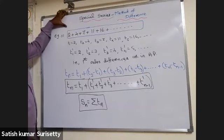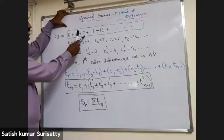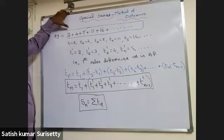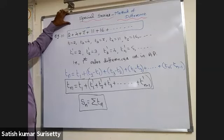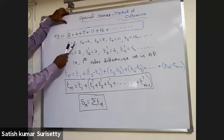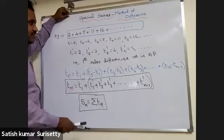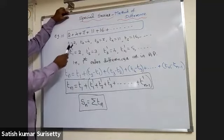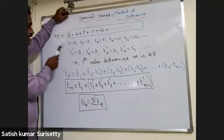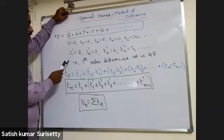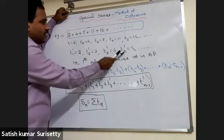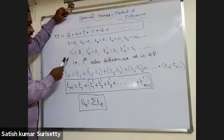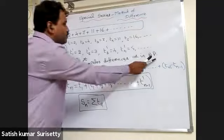Consider the example: 2 + 4 + 7 + 11 + 16 + ... The terms 2, 4, 7, 11, 16 are neither in AP, GP, HP, nor AGP. Here t1 = 2, t2 = 4, t3 = 7, and so on. Calculating the consecutive term differences: t1' = 2, t2' = 3, t3' = 4, t4' = 5. The first-order differences are in arithmetic progression.